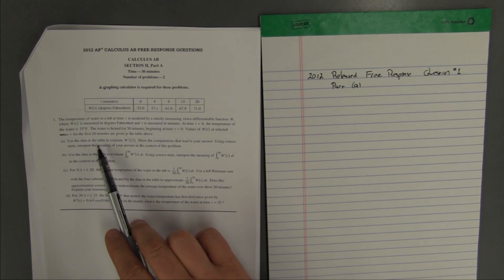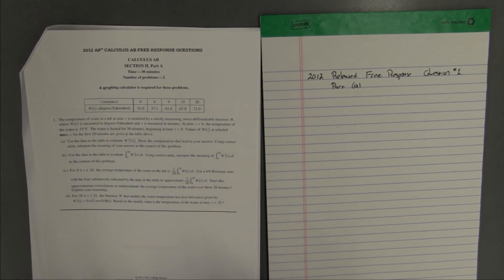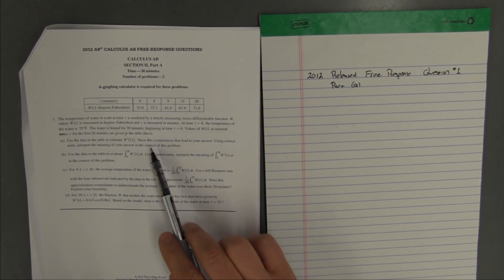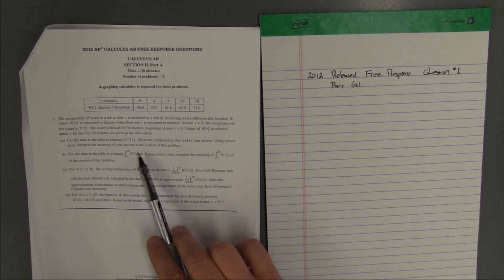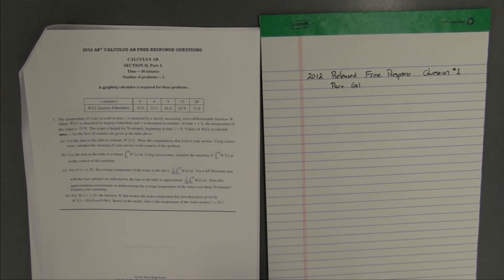It says use the data in the table to estimate w prime of 12. Show the computations that lead to your answer using correct units, interpret the meaning of your answer in the context of this problem.